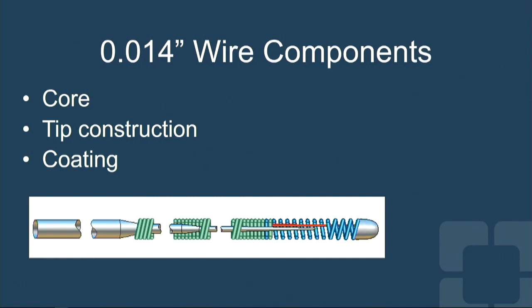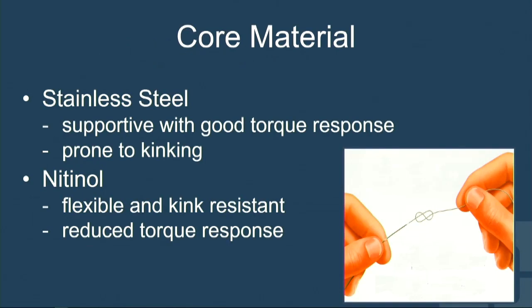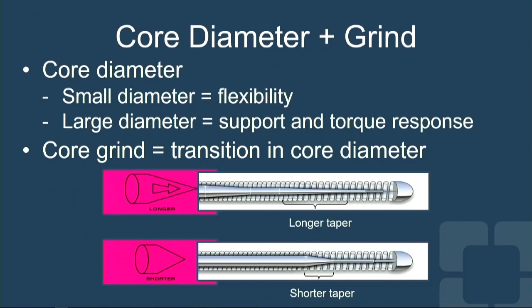Let's go through some of the components of guide wire construction: there's the core, the tip, and the coating. For the core, there are two typical materials: stainless steel and nitinol. Stainless steel is very flexible and very torque responsive, but unfortunately it's prone to kinking. Nitinol is far less prone to kinking but is probably not as torque responsive — that's probably the biggest takeaway from that.